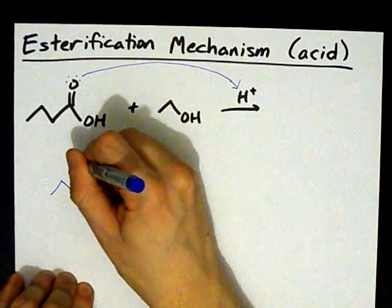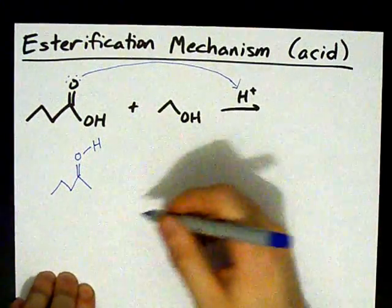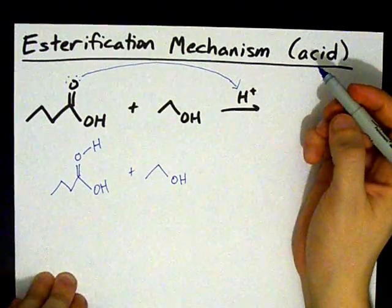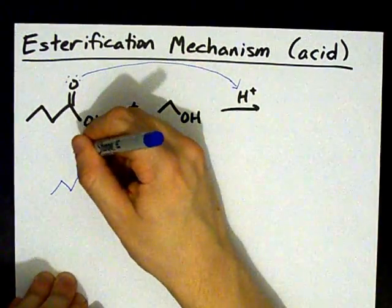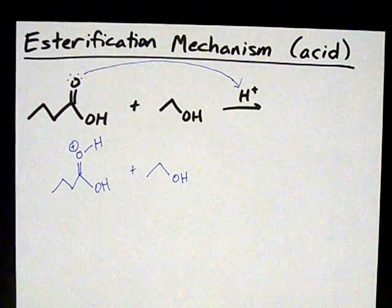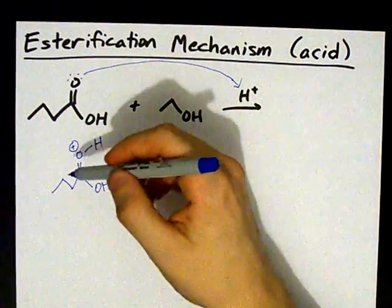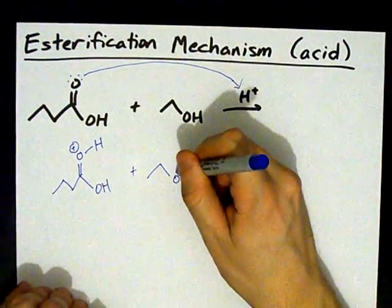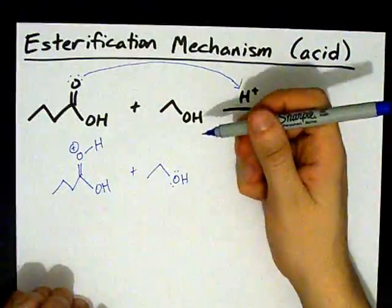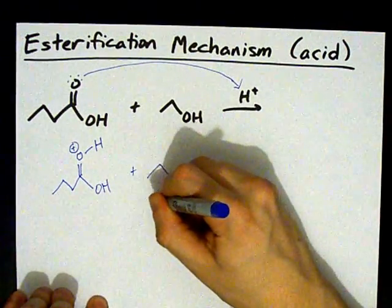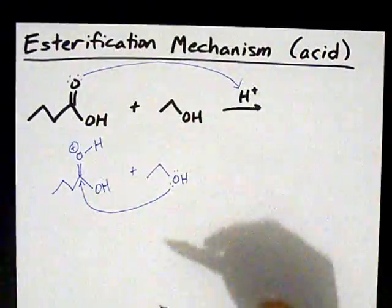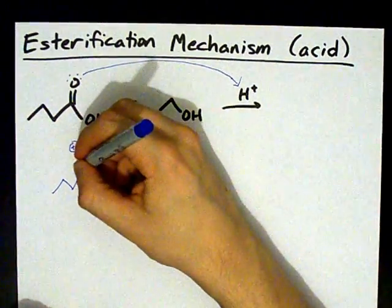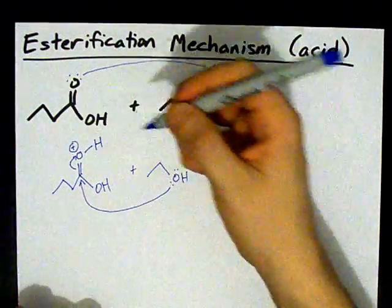That's going to give you a carbonyl carbon with a hydrogen on it. You've still got your OH and you've still got your alcohol waiting patiently. This oxygen has three bonds to it, so it has a formal charge of plus one. This activates the carbonyl group and makes it even more susceptible to nucleophilic attack. And it's here from the alcohol — it will attack the delta-plus carbonyl carbon and push electrons from the pi bond onto the oxygen itself.